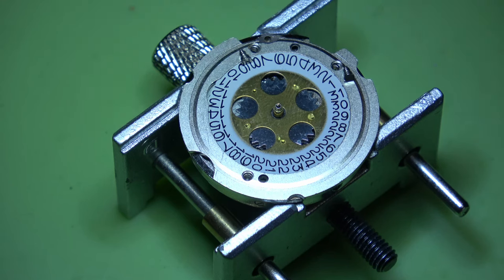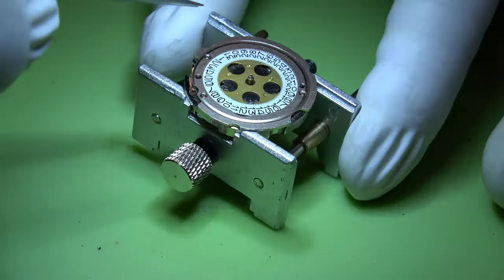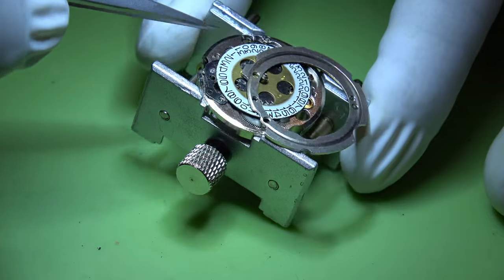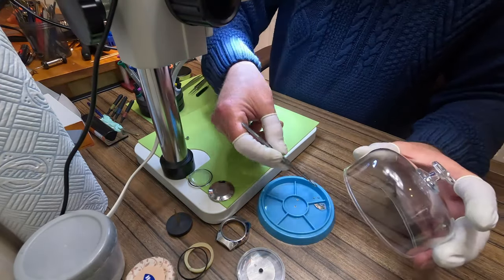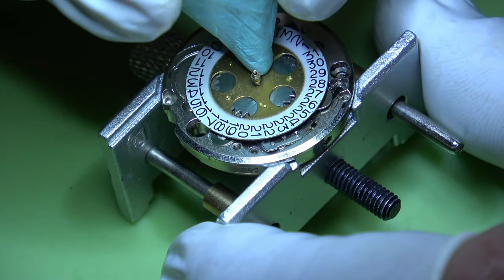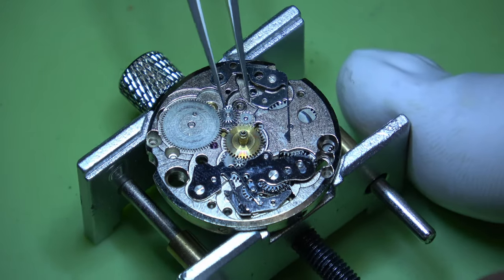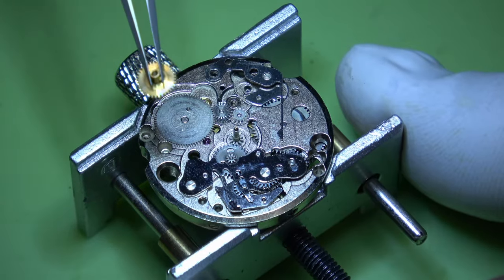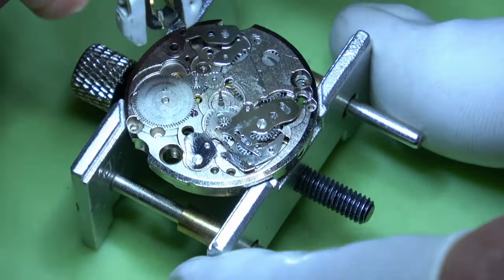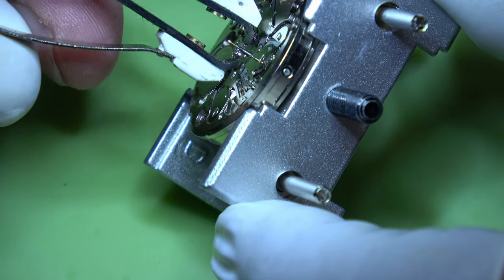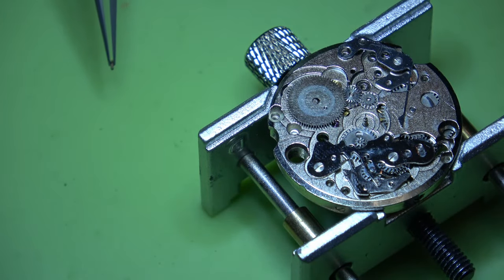That will allow us to remove the date wheel along with the hour wheel and the cannon pinion. A little check of these screws, they're all the same. That retaining ring comes away nice and easy. Using a bit of rodico, we can lift that date wheel off, then the hour wheel, then the cannon pinion, and then there's this tube for the second hand. We're going to need to reattach that somehow to the second hand.